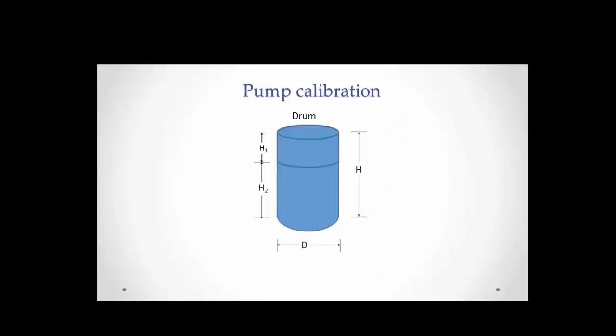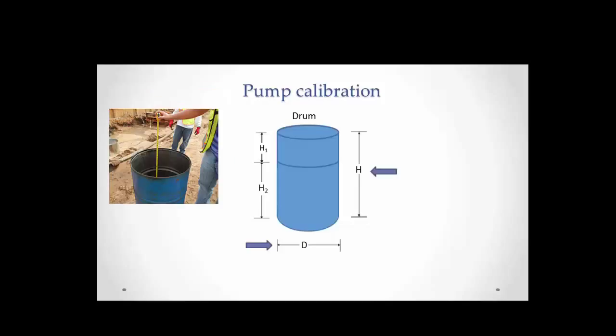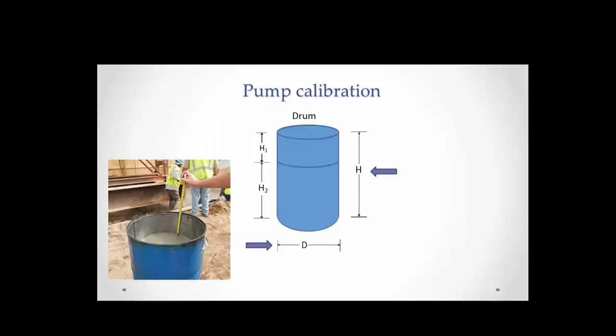Here is a sketch showing the dimensions we need to determine for the test. We measure the inside diameter D, the total height of the barrel H from the inside, and at the end of the stroke we measure the free distance between the height of the grout and the top of the barrel.